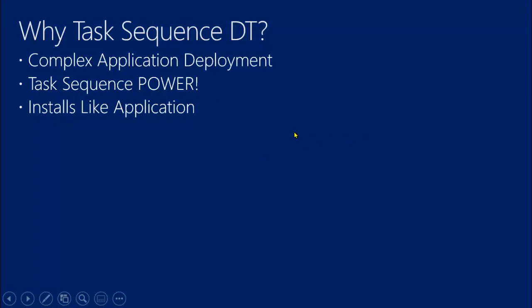So why do we care? Complex application deployment — there is no better solution than a task sequence. There's amazing power in the task sequence. Being able to take full advantage of that task sequence engine to manage things like reboots — reboots are supported, and you can't do that outside of a task sequence with a normal application. Nested task sequences are supported too. Uninstalling by task sequence is totally supported.